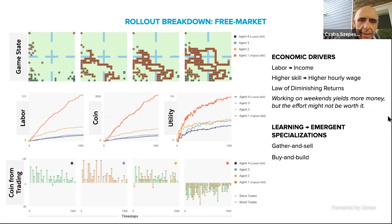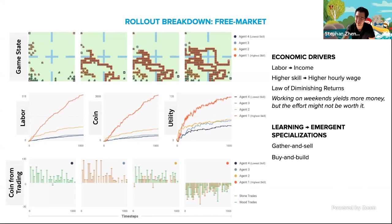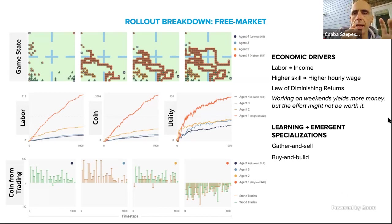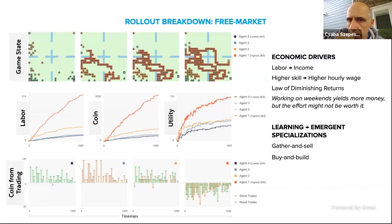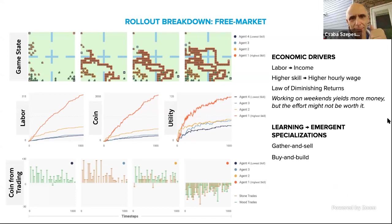Can agents communicate? No communication. The agents have local observations involving awareness of resources in the neighborhood and other agents potentially. They know that an agent is there, they see resources, and they can see other houses. The emergence of specialization is pure self-interest and introspection rather than strategic communication in a multi-agent sense.